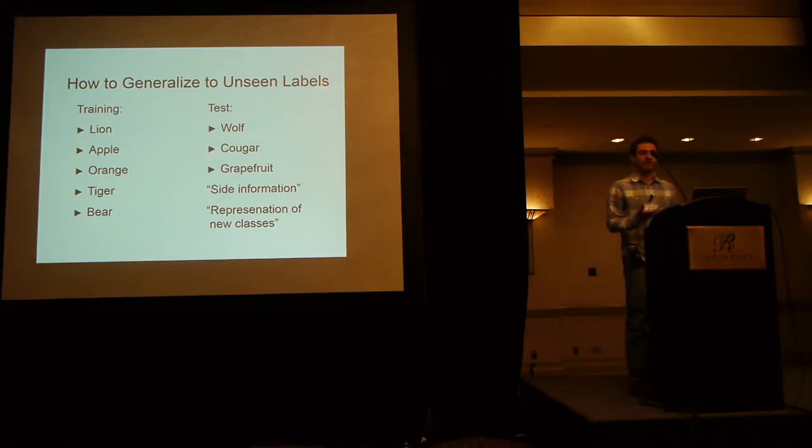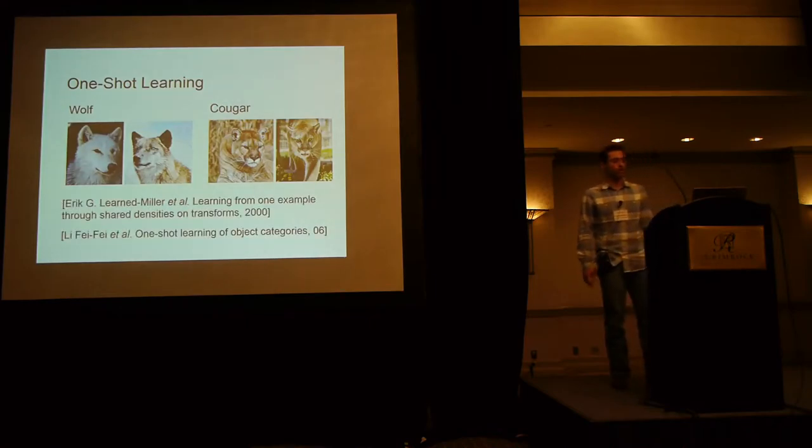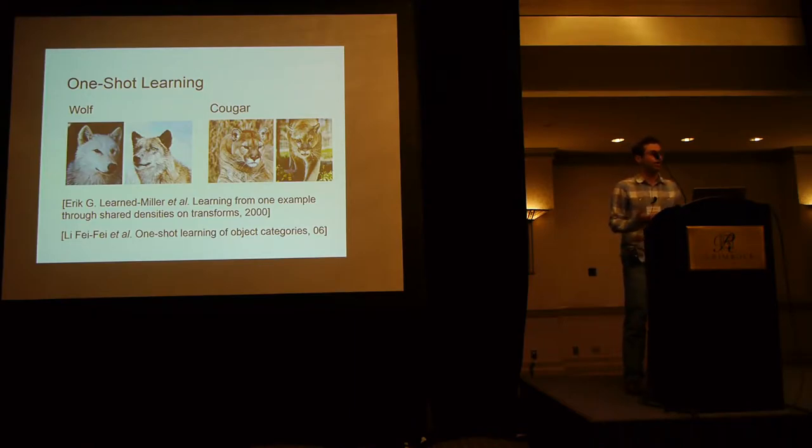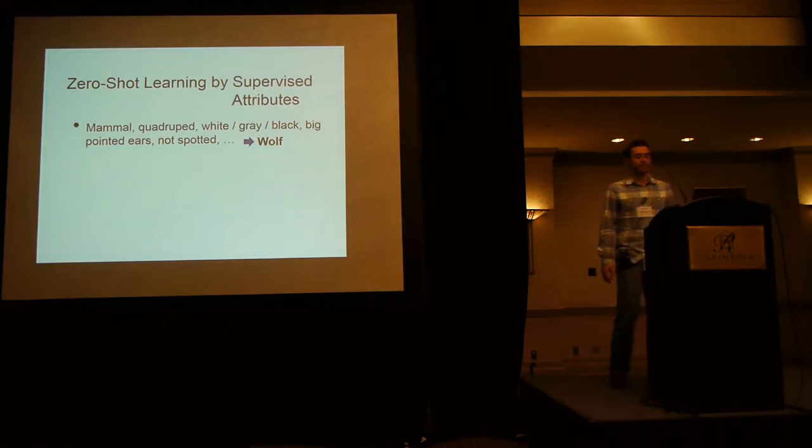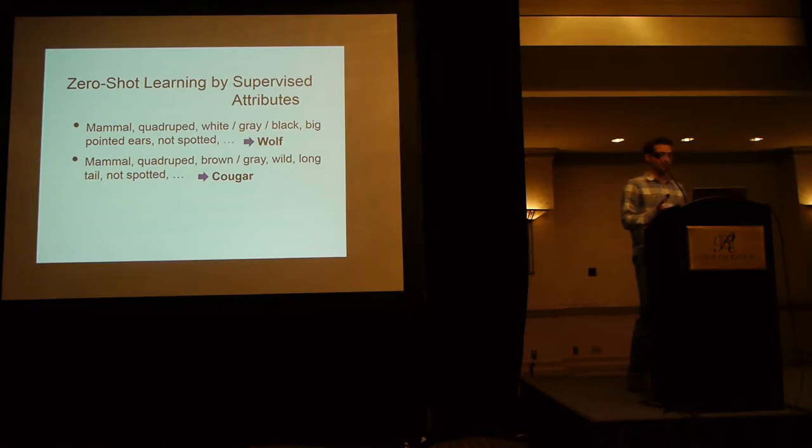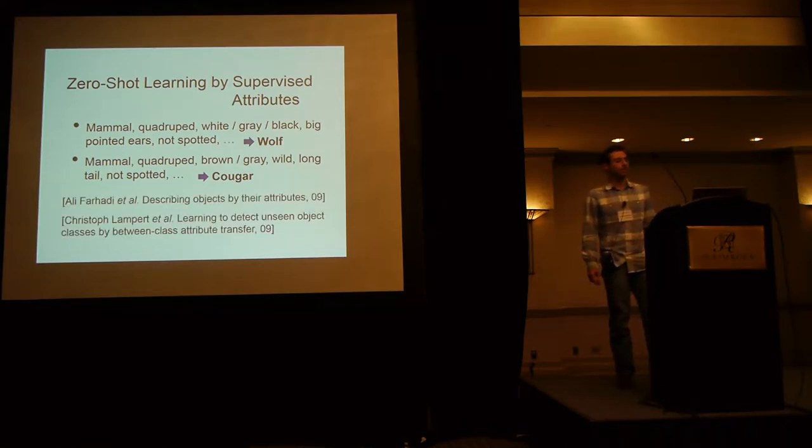So we need some side information, or we need some way to represent new classes to the classifier. One way to do so is one-shot learning, when we are given a few canonical examples for the test classes, and the goal is to learn a very good representation at training time to be able to very fast generalize to these new classes. Another approach is to use supervised attributes. So in this setting, we describe wolves as a mammal, a quadruped, which is white, gray, or black, and it has big pointed ears, and it's not spotted, and we name similar attributes for cougar. There had been some work on this, but the problem is in a larger scale setting, it's very difficult and tedious to manually annotate these attributes, and sometimes it's even difficult to come up with these distinctive attributes for classes that are very close, for example, some species of animals or different types of objects.